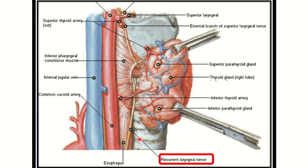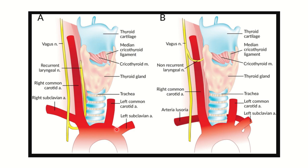The recurrent laryngeal nerve runs from the vagus nerve and passes through the groove between the esophagus and the trachea. We can also see other structures — the internal jugular vein and common carotid artery — located just behind the esophagus. In another image, we can see the larynx, thyroid gland, trachea, and posteriorly the esophagus, with the recurrent laryngeal nerve located between the trachea and esophagus.